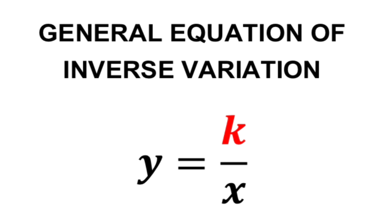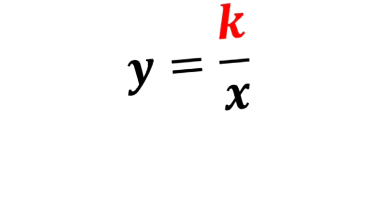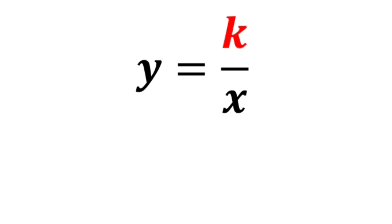We should also remember that the general equation for an inverse variation is y equals k over x, where k is called the proportionality constant. To determine the constant of variation, or proportionality constant k, for an inverse variation, we can rearrange this equation.